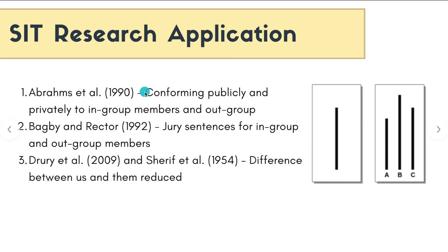Since all participating students were psychology students, the confederate from the psychology department was part of the in-group. They followed the same procedure where different length lines were shown and the confederate and participants estimated which one best represented the length of the main line. What was found is that participants were more willing to conform publicly to the in-group member, and equally more publicly willing to not conform to the out-group member. In private, when asked to answer without speaking aloud, they chose the answer they thought was most correct and did not try to conform.